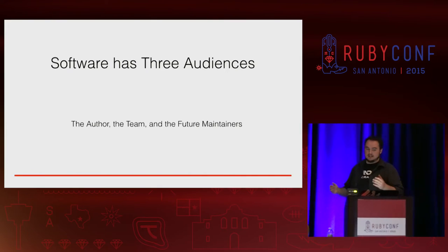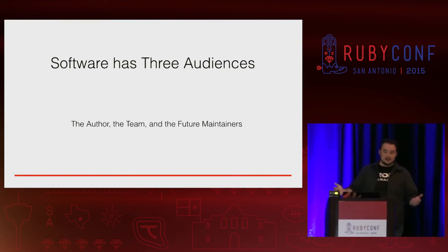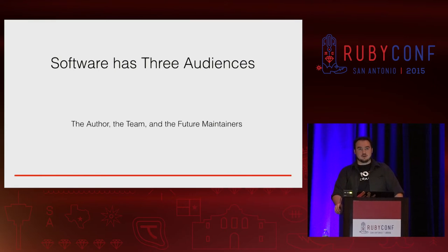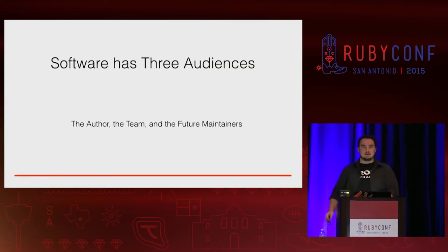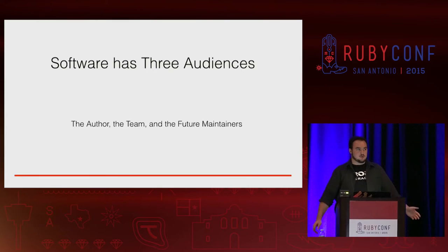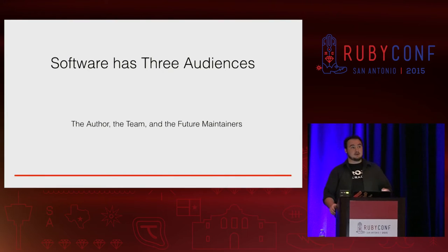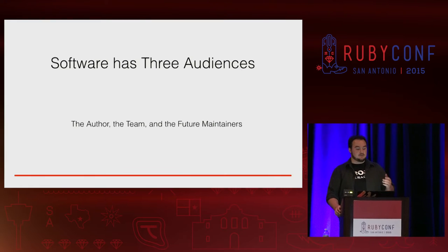Software has three audiences: the author — ourselves writing it — the team that we're working with, and the future maintainers, who may be the same people or completely different people. Communication through both code and your version control needs to be empathetic to all those groups. Software is the result of thousands of decisions made over months, even years, and we should be able to answer why those changes were made at each point.